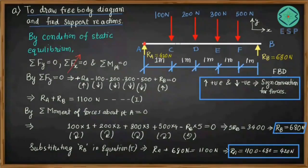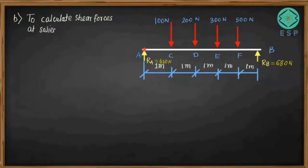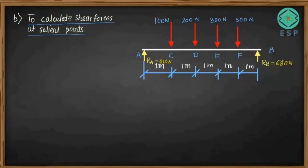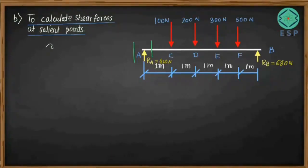Now we go to Step 2: to calculate shear forces at salient points. Salient points are basically the points at which forces are acting on the beam — points A, C, D, E, F, and B. We will start from left to right, considering sections just before and just after each salient point where forces are acting.